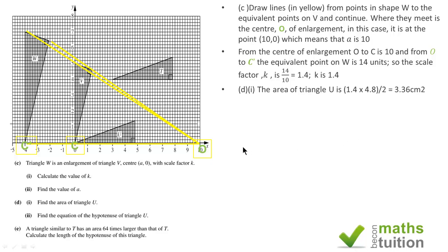We now want to find the equation of the hypotenuse of triangle U. The hypotenuse goes through the point 0, 0, and the equation of a straight line is y equals mx plus c, and because the hypotenuse goes through the point 0, 0, c is 0.